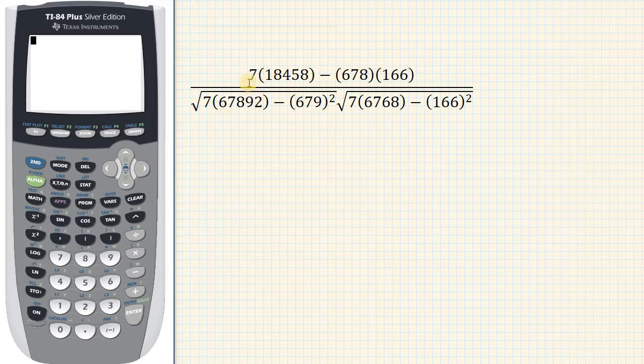So first just enter in the numerator just like you see it. That's going to be 7, and we could hit times and then parenthesis, or if you wanted to, you could just do the parenthesis and then the number 18458, close parenthesis, minus, and then parenthesis 678, and then 166, and hit enter. And that's the answer you get when you put in the numerator.